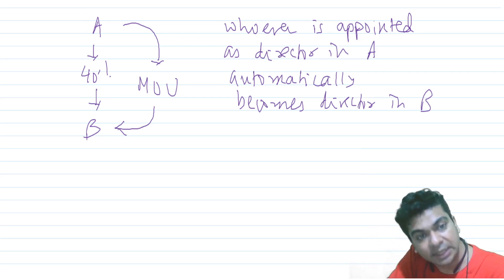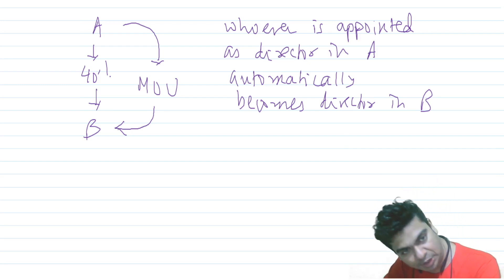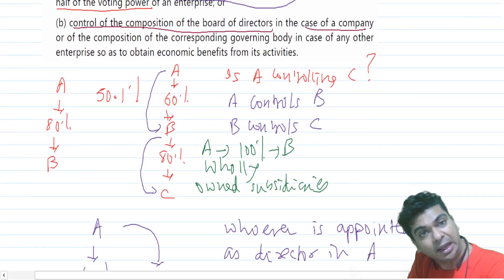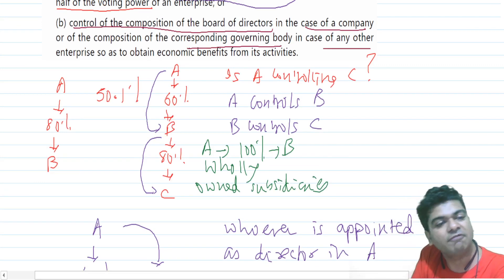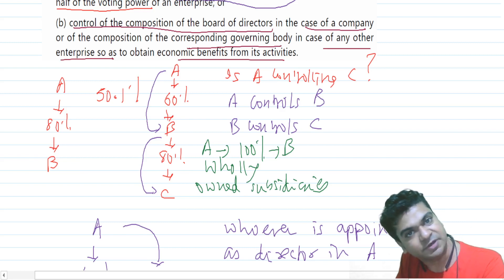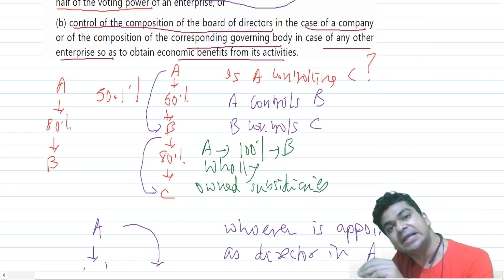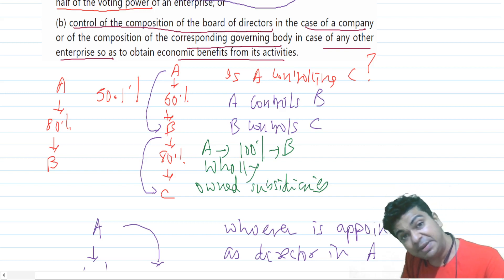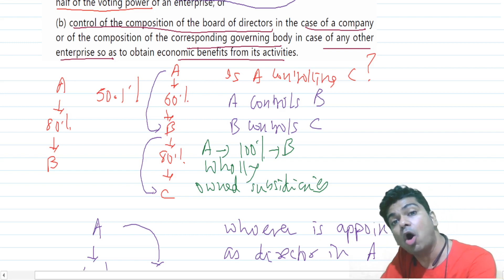So a parent-subsidiary relationship is established. AS 21 also uses some other words — in case of a company, it refers to the 'board of directors,' or the 'composition of the corresponding governing body in case of any other enterprise, so as to obtain economic benefits from its activities.' AS 21 is not limited to identifying subsidiaries simply as companies — even a partnership firm may also become a subsidiary. For example, company A being able to control the governing body of a partnership firm.